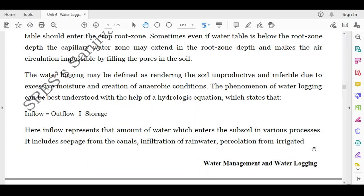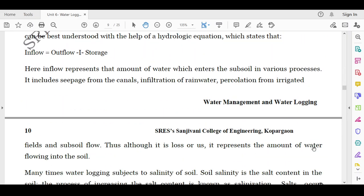It includes seepage from canals, infiltration of rainwater, percolation from irrigated fields, and subsoil flow. Thus, although it is a loss, it represents the amount of water flowing through the soil.